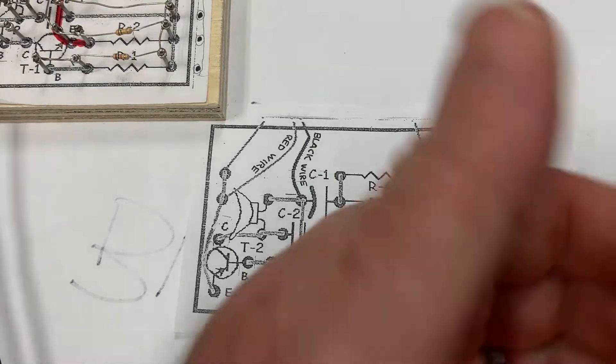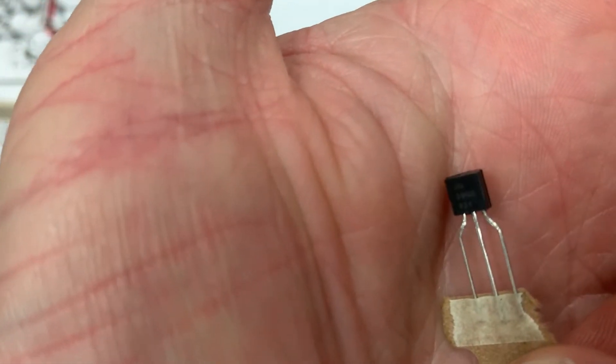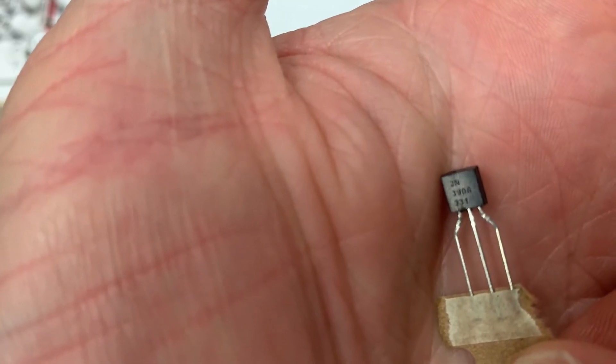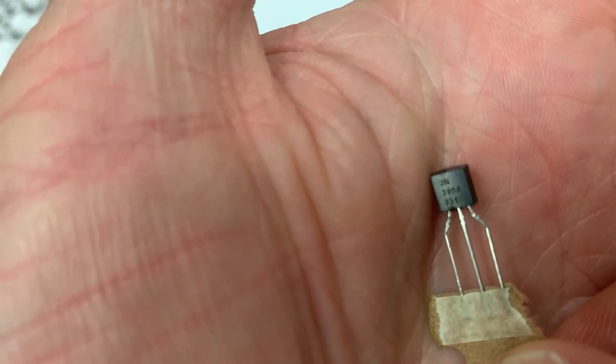Transistors have three legs coming off the body. When you look at the face closely, the face is the flat side, it has numbers written there, and the number on this one is 3906.